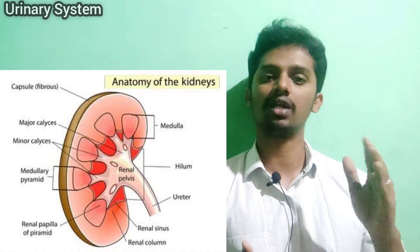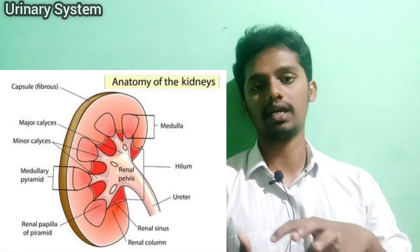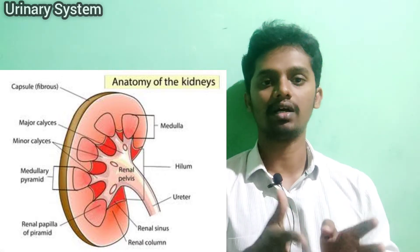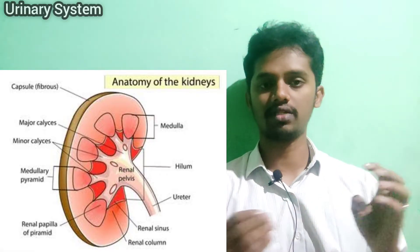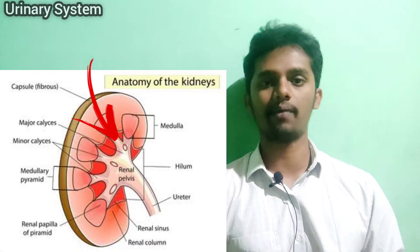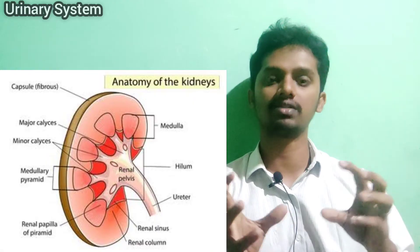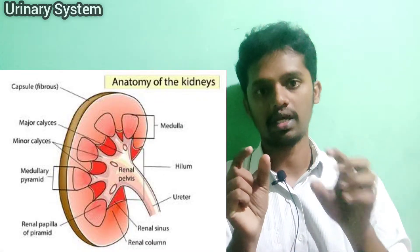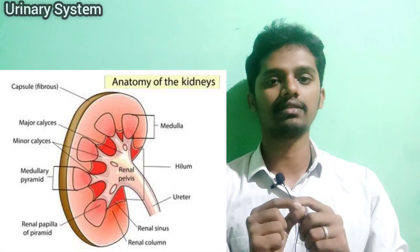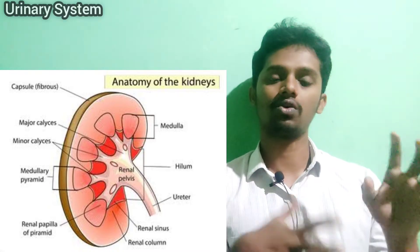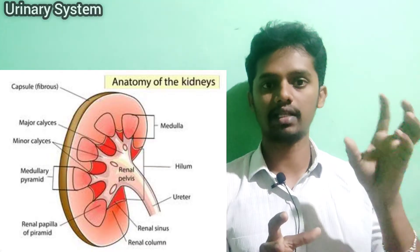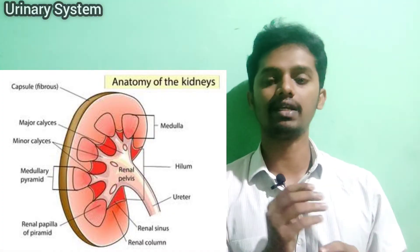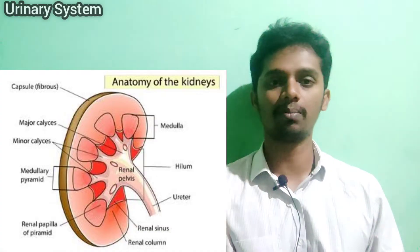Overall, the outer region is the renal cortex and the inner deeper region is the renal medulla. In the renal medulla there are renal pyramids, separated by renal columns. The pyramids have extensions called renal calyces, and the structure formed by the calyces is called the renal pelvis. The passageway where arteries, veins, and the ureter enter and exit is called the renal hilum.